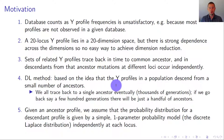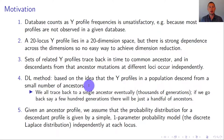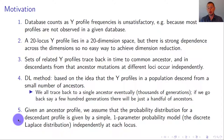The idea is to use Y-profiles in a population, estimate a small number of ancestors and their profiles, assume that mutations happened independently, and model these using discrete Laplace distributions. We can trace all profiles back to a single ancestor if we go enough generations back; here we make an approximation going fewer generations back and have a small set of ancestors instead. Given an ancestor profile, we assume the probability distribution for a descendant profile is given by a simple one-parameter distribution — the discrete Laplace distribution — motivated by the fact that mutations happen independently across loci.